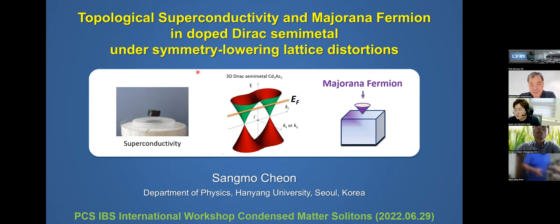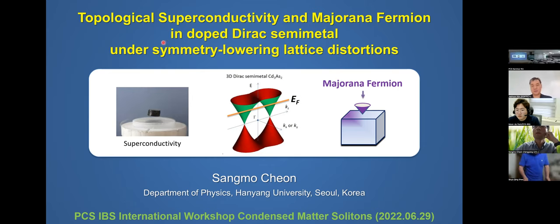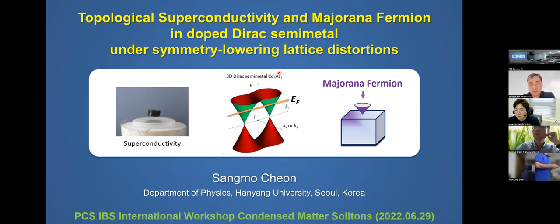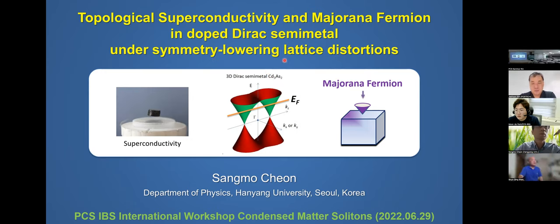In this talk, I will discuss two protocols for topological superconductivity and Majorana fermions in Dirac semimetals on the symmetry-breaking lattice distortion. I will discuss the Majorana fermions in the Dirac semimetal, for example, such as cadmium arsenide. And I will discuss the effect of the lattice distortion in this talk.